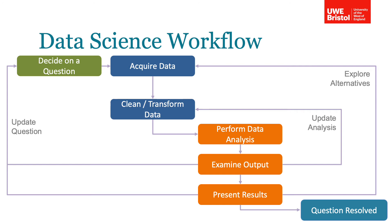In this example, we see three loops back to earlier stages of the process. We may need to update our analysis if we decide we need to consider more or different features. We may find we need more data — for example, when examining an insider threat, do we have sufficient information about their actions, or only coverage of a subset such as network activity but no file access records? Finally, we may decide we need to update our question if the original is not achievable or needs to be more specific.